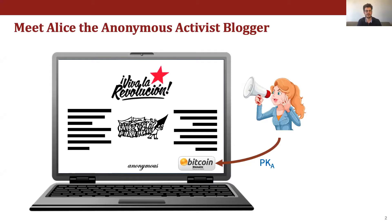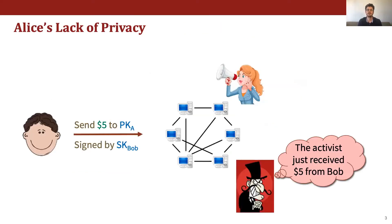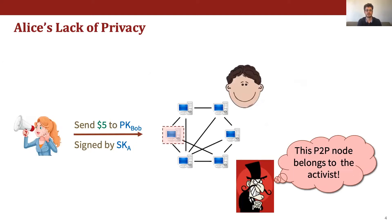Our story begins with Alice. She's a blogger that writes about many controversial topics online, so she cares strongly about her anonymity. At the same time she'd like for her fans to be able to support her financially, so she sets up a Bitcoin account and posts the address on her blog. The problem is that Bitcoin does not guarantee anonymity of its users, so when one of Alice's fans, say Bob, sends her a transaction, any observer of the blockchain can see this.